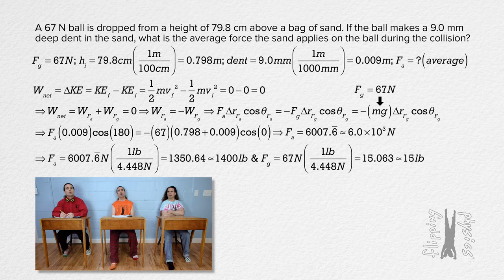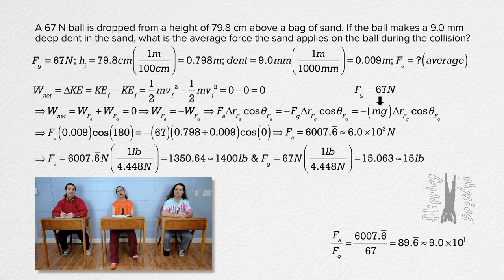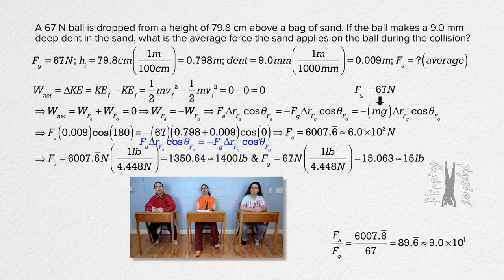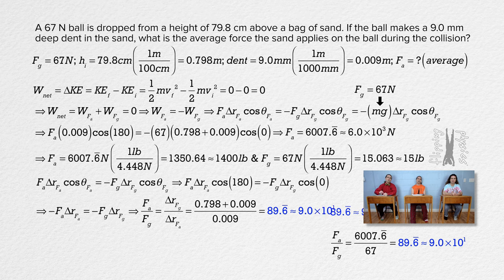The force applied by the sand is roughly 90 times greater than the weight of the ball? That seems like a lot. Yeah, 6,007.6 repeating newtons is about 90 times greater than 67 newtons. Why is that? The force of gravity gave the ball kinetic energy, and the force applied has to remove all that kinetic energy over a much shorter distance, so it makes sense that the force applied would be much greater than the force of gravity. If you go back to the work equation and solve for the ratio of force applied over force of gravity, you get the distance where gravity acts over the distance where the applied force acts — which equals the same ratio of roughly 90. Because gravity has 90 times more distance to put kinetic energy into the ball than the applied force has to remove it. That actually makes a lot of sense.